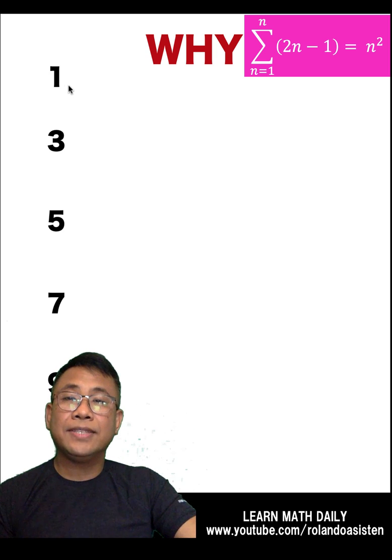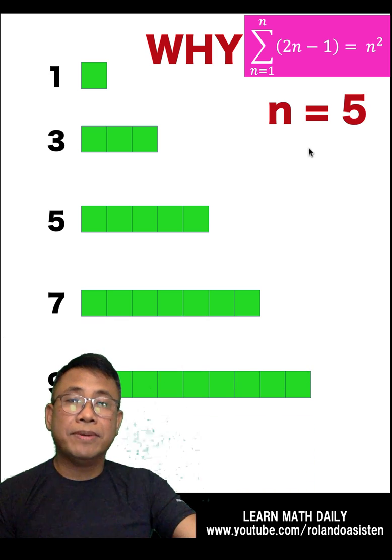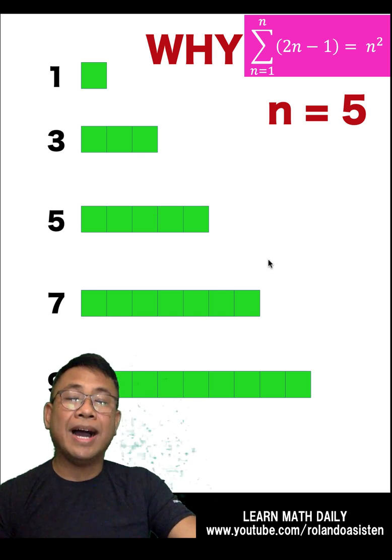Let's start by representing this 1 as 1 squared, this 3 as 3 squares, this 5 as 5 squares, 7 as 7 squares, and 9 as 9 squares. Let's remember that our n is 5 because we have 1, 2, 3, 4, 5 odd numbers.